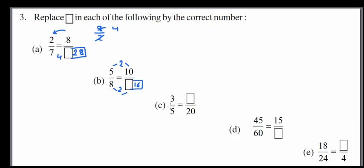Continuing part three: 5 times 4 is 20, and 3 times 4 is 12 — just count your tables. For 15 over blank: 15 threes are 45, and how many threes give 60? Dividing 60 by 3 gives 20, so 15 over 20 is the answer. For 4 over blank: 4 sixes are 24, and 18 divided by 6 gives 3, so the answer is 3.